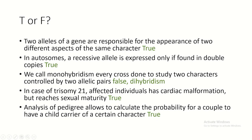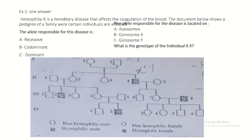In trisomy 21, affected individuals have cardiac malformations but reach sexual maturity - true. Analysis of a pedigree allows calculation of the probability for a couple to have a child carrying a certain character - true.